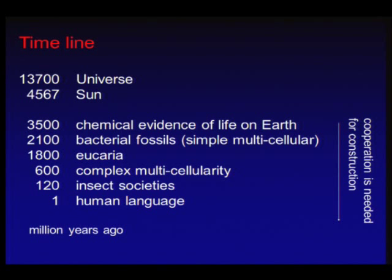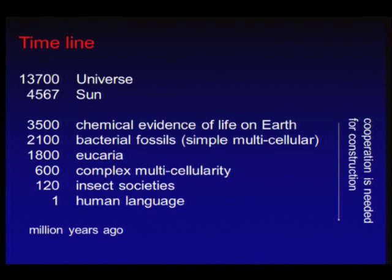Approximately 3.5 billion years ago, we have chemical evidence for life on Earth. 2.1 billion years ago, bacterial fossils — already simple multicellular, with this kind of cooperation. 1.8 billion years ago, eukarya, the higher cells that make up everything — you and me. 600 million years ago, complex multicellularity, which was a big step in evolution: the invention of the nervous system and the immune system. Then insect societies 120 million years ago, because eusociality is a distinct form of biological organization.